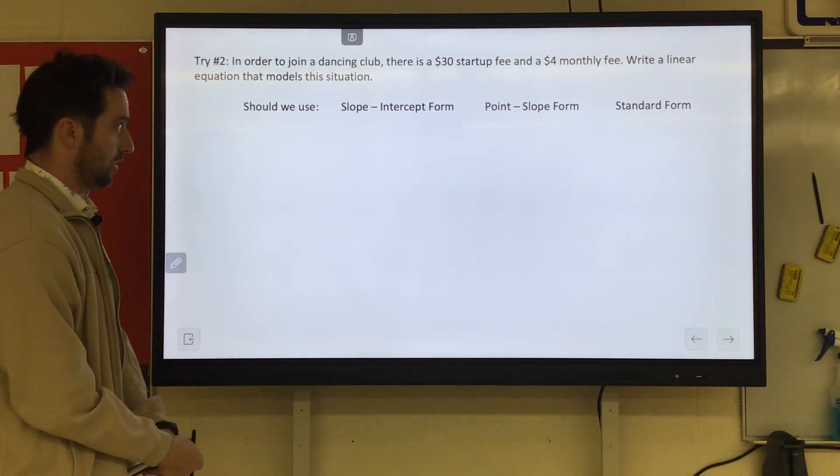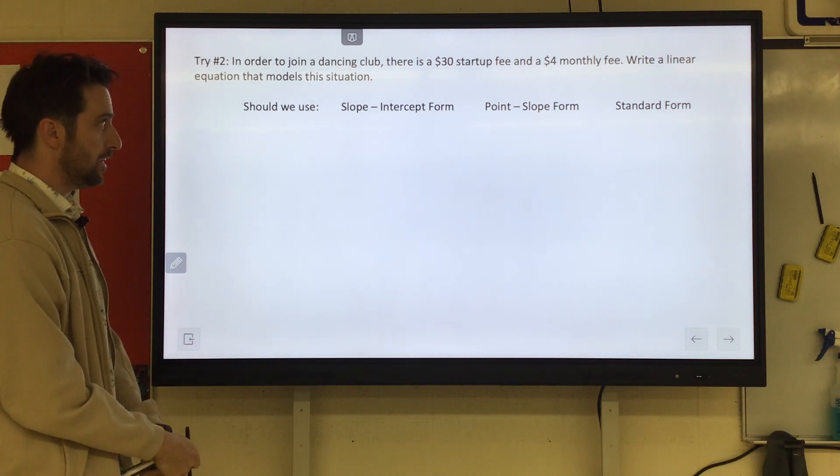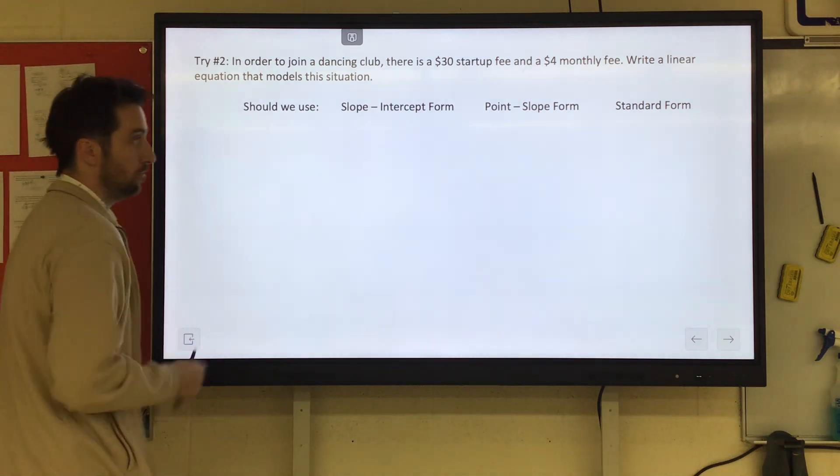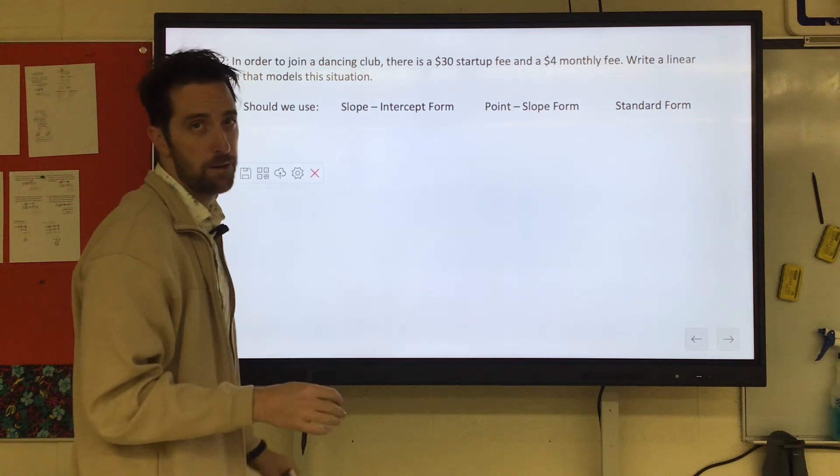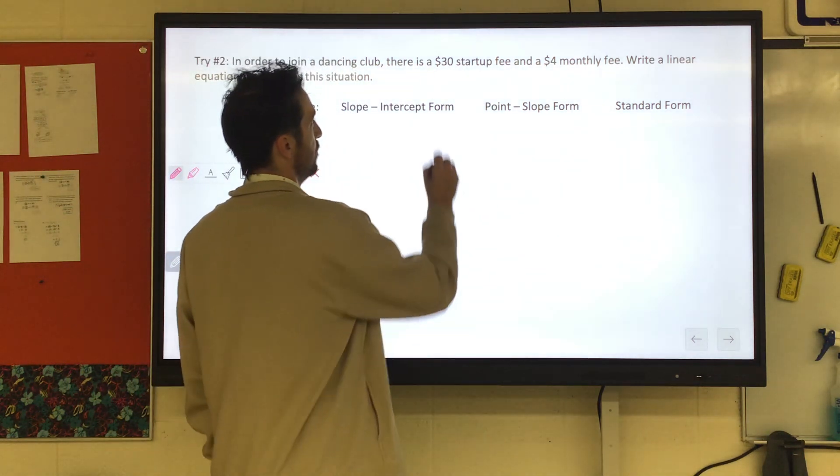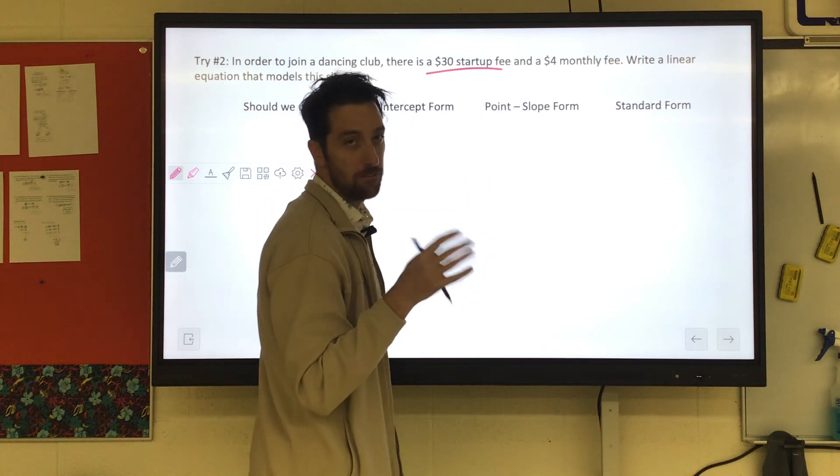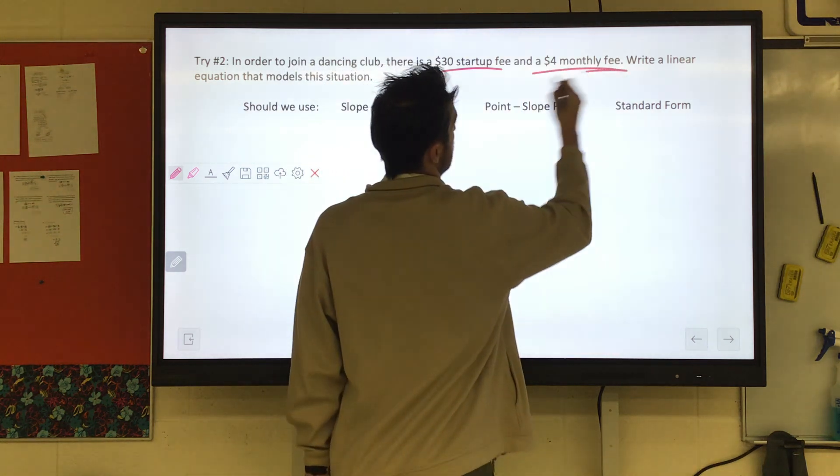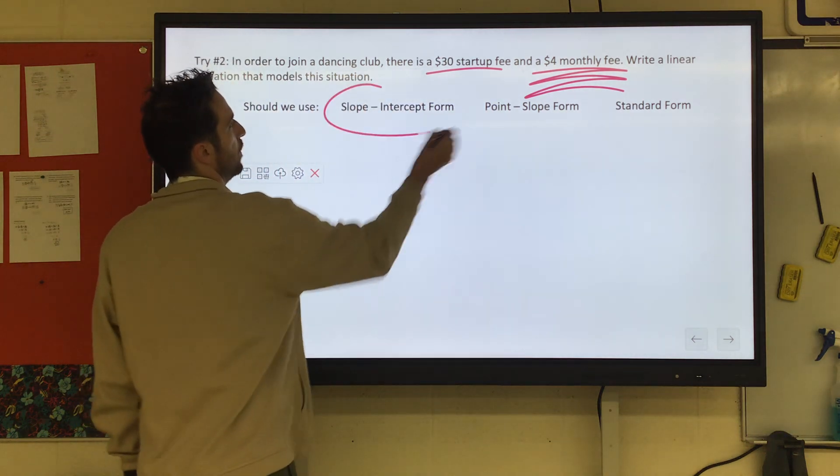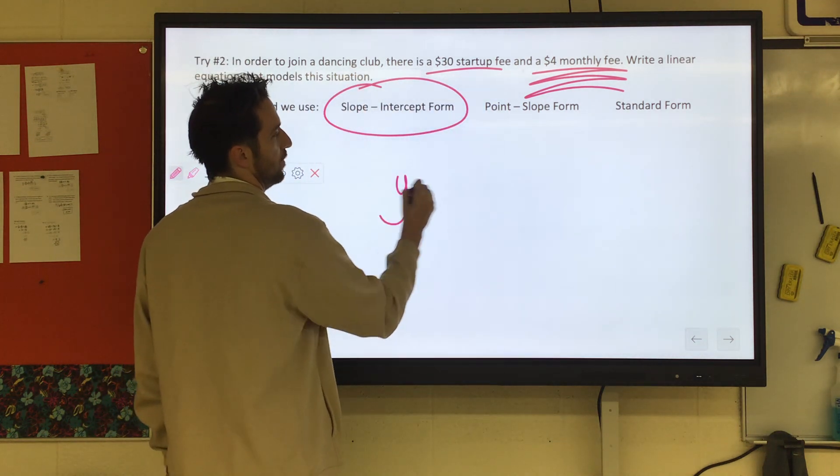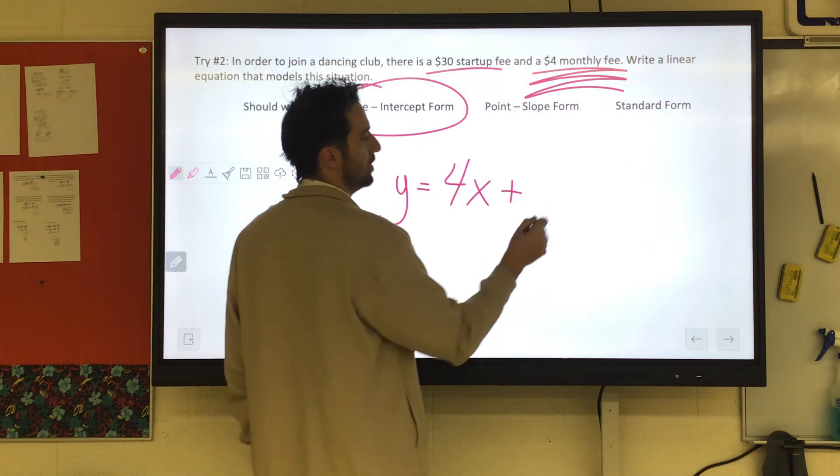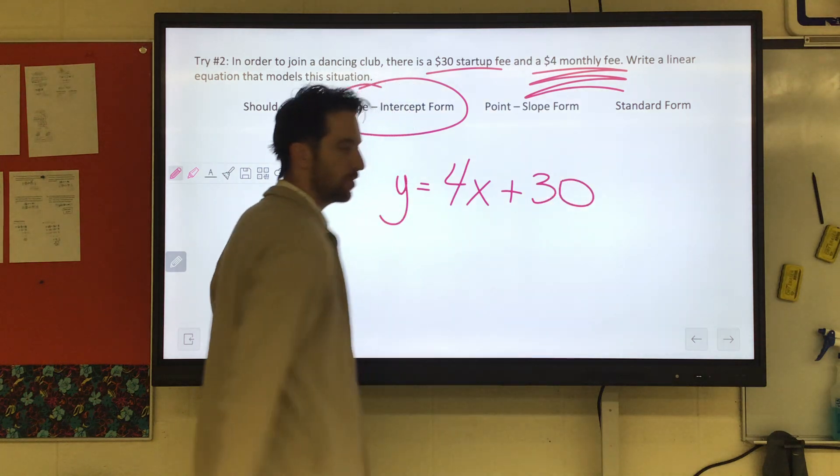In order to join a dancing club there's a $30 startup fee and a $4 monthly fee. Write a linear equation that models this situation. Pause it. Try it. Check back in. So $30 startup fee. That's a fixed amount. That's going to be our y-intercept. The $4 monthly fee, that's our rate. That is like our slope. So this would go well for slope-intercept form. Our slope is the $4 per month, and then our fixed amount that we have to pay is that $30. 4x plus 30.